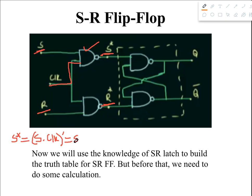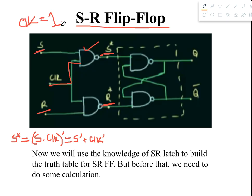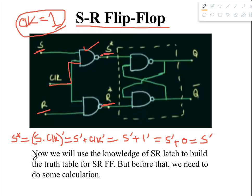So we can write S* = (S · clock)' — since this is a NAND gate. From De Morgan's law, this becomes S' + clock'. Now, for a circuit to be a working flip-flop, the clock pulse needs to be 1. If clock = 1, then clock' = 0, so S' + 0 = S'. Therefore S* = S'. Similarly, we can calculate R* and we get R* = R'. You can try it yourself.